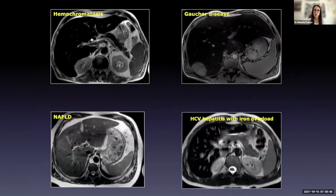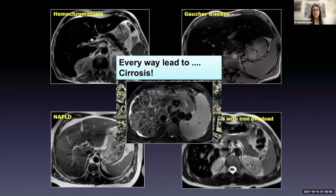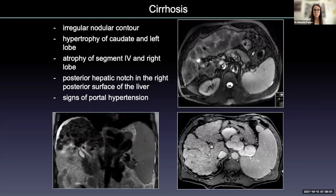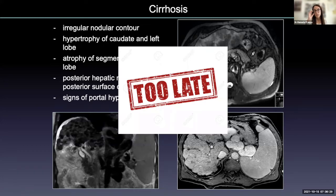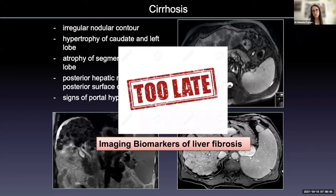As mentioned before, all diffuse liver diseases may potentially lead to cirrhosis. Cirrhosis can be easily recognized with imaging by the irregular nodular contours of the liver, hypertrophy of the caudate and left lobes, atrophy of segment four and the right lobe, and signs of portal hypertension such as splenomegaly, ascites, and gastroesophageal varices. The problem is that these signs are too late — we need to detect liver fibrosis before cirrhosis because fibrosis can be reversible if detected and treated early enough.